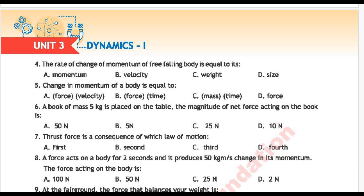Next question number 4: The rate of change of momentum of a freely falling body is equal to its — Option A: momentum, Option B: velocity, Option C: weight, Option D: size. Correct answer is Option C: weight.